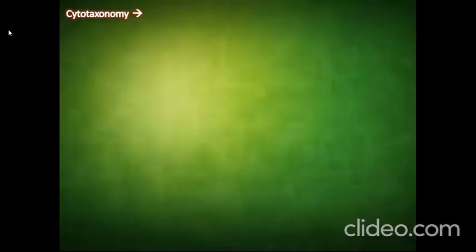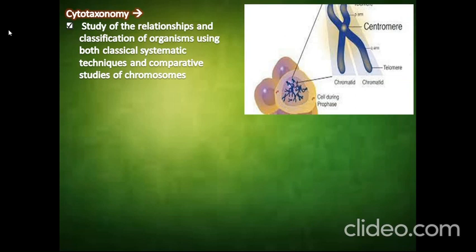Then we will talk about cytotaxonomy. It is a study of the relationships and classification of organisms using both classical systematic techniques and comparative studies of chromosomes. Chromosome is a thread-like structure located inside the nucleus of a cell, passing from one generation to next. It contains DNA and genes. So cytotaxonomy is based on chromosome number, structure, and behavior.